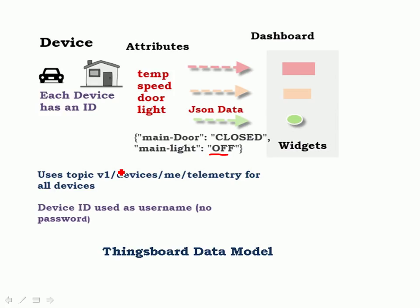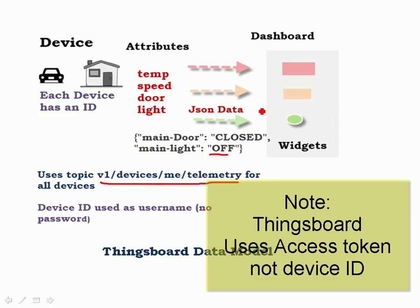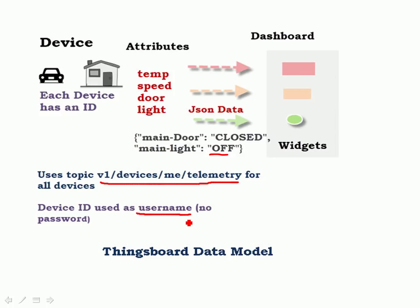The devices publish on a single topic, which is unusual. A lot of dashboards use the device ID as part of the topic name, but ThingsBoard doesn't. It uses a common topic for all devices and uses the device ID in the username. So the username becomes the device ID, and there's no password, and we'll see that when I show you the Python script.